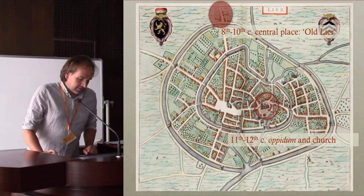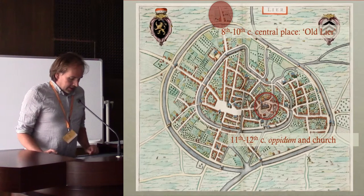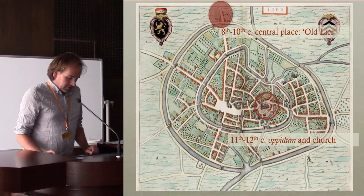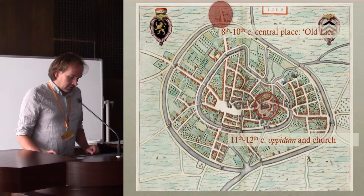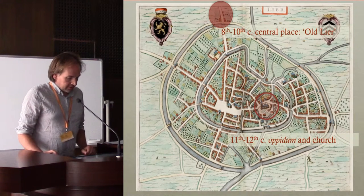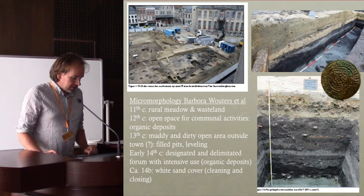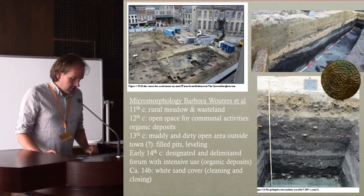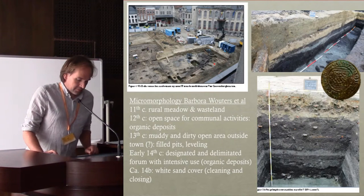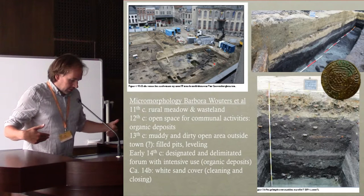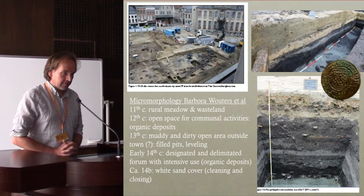Here is another example — the small town of Lier. You see an entire late medieval development with a marketplace, but the origin of the town is an oppidum, a fortress from the 11th to 12th century, with a church situated in the red circle. The older origin is even outside the city — an old estate center called Old Lier. Micromorphological research on the market square shows that it starts with a symbolic stone market square, but going back in time you end with a rural meadow and wasteland where flax was cultivated.